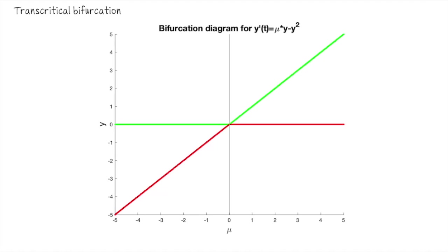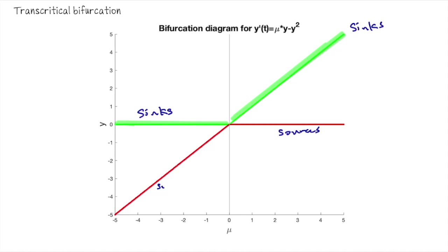Here is the bifurcation diagram done in MATLAB. Highlighting the sinks: we have the mu axis in the left half plane and y equals mu up in the first quadrant — those are sinks. The rest are sources. The bifurcation happens at the origin where we have a node. This bifurcation diagram looks different than the ones we've seen so far — those were saddle node bifurcations. This is an example of what's called a transcritical bifurcation. Two equilibria existed to the left of the origin, two to the right; they coincided at the origin and there essentially exchanged stability.